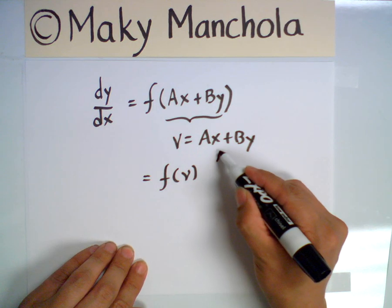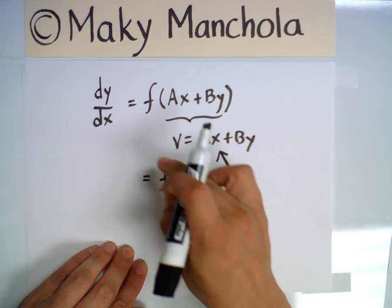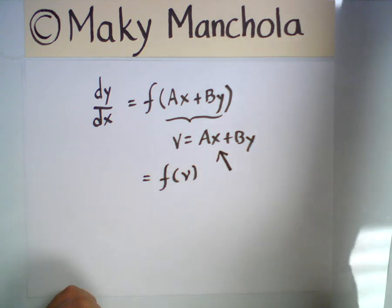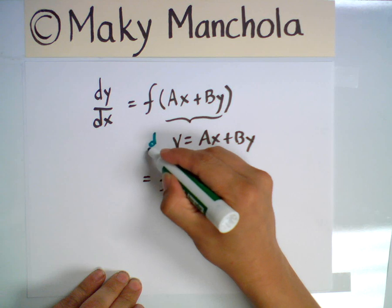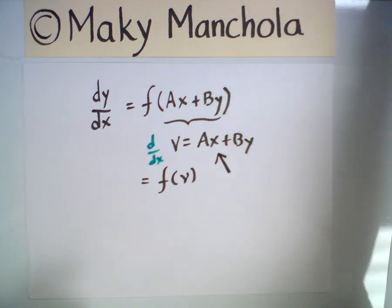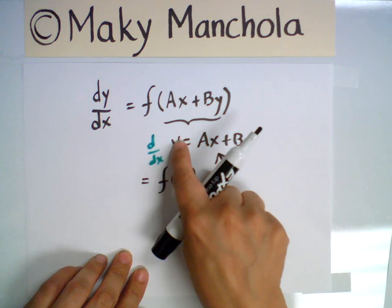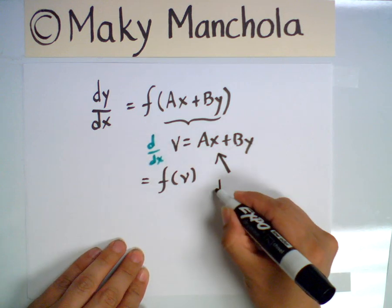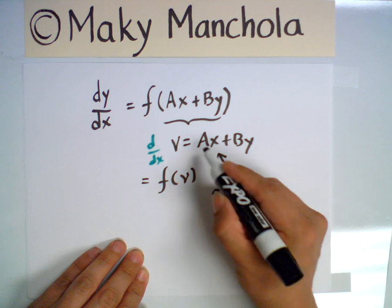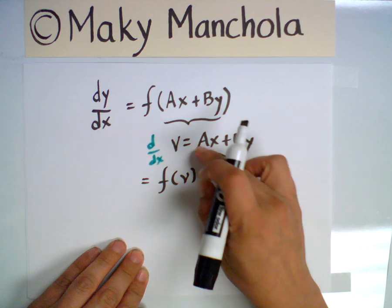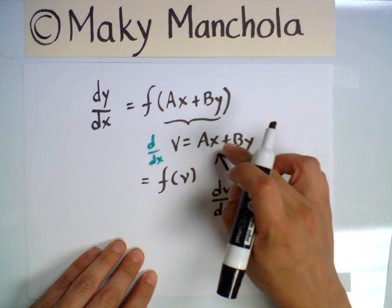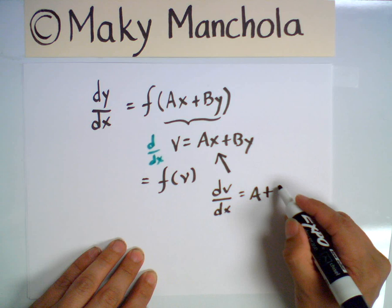We use our substitution to find out. Differentiate both sides with respect to x. On the left-hand side we get dv/dx. On the right-hand side we get a — the derivative of ax with respect to x is a — plus b times dy/dx.